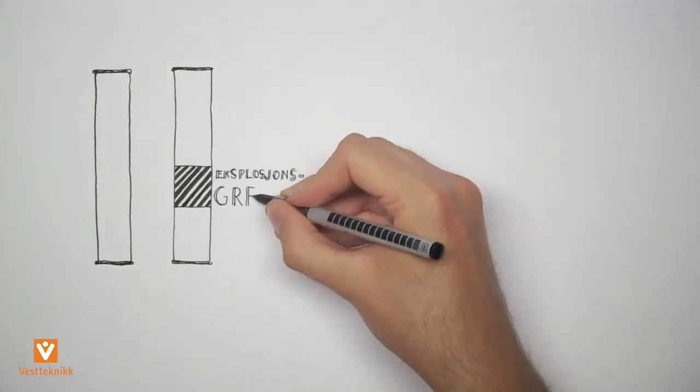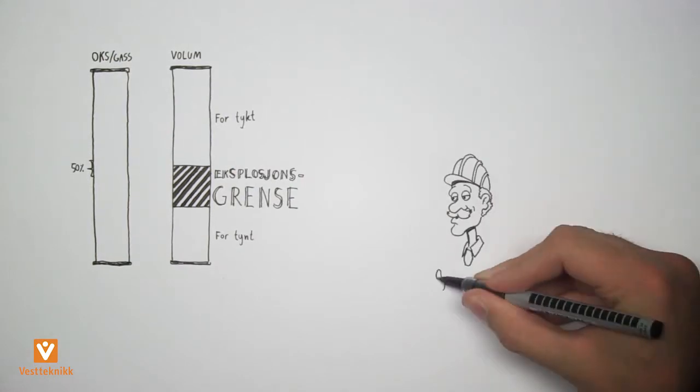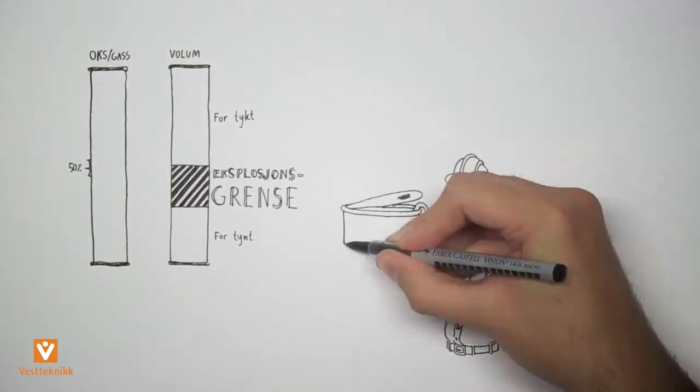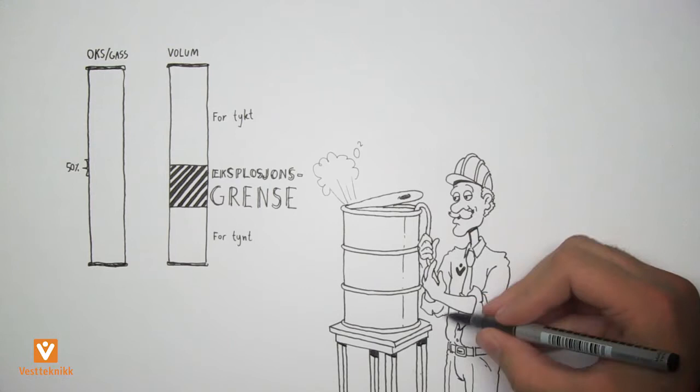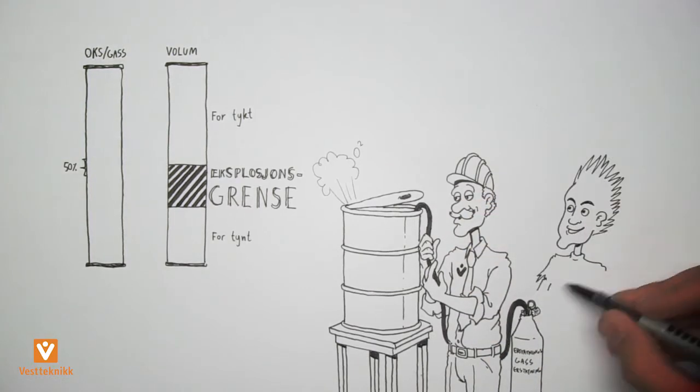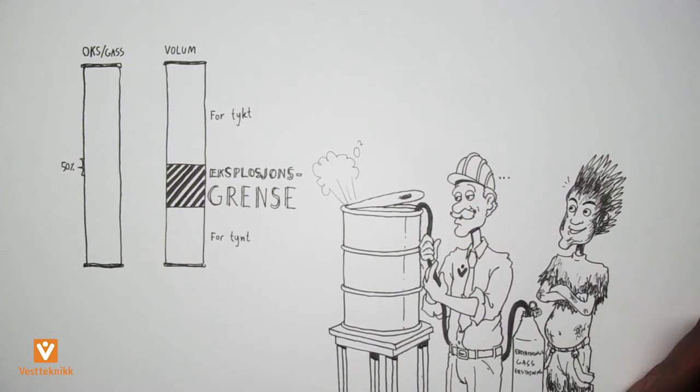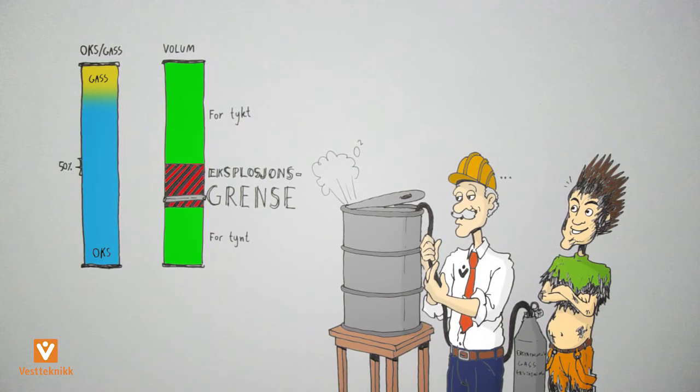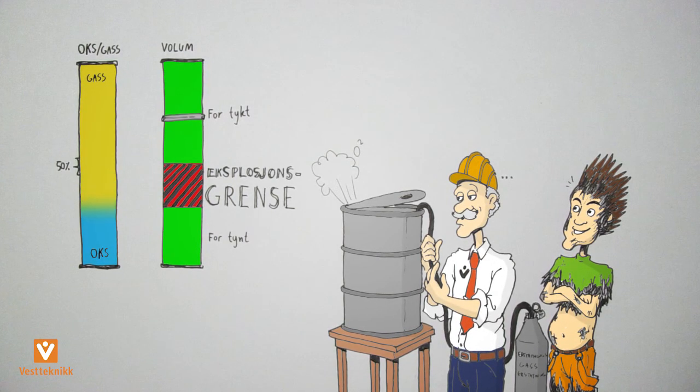This can be done, for example, by regulating the ratio between oxygen and gas. And that's what we call safe thinking. One way of doing this is called purging. This is a technique where you either fill the tank or container with gas, commonly nitrogen, to squeeze out the oxygen or gas.